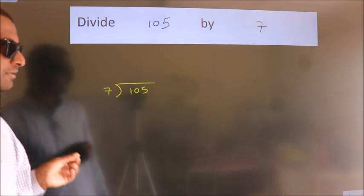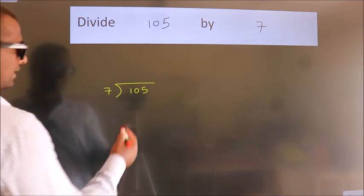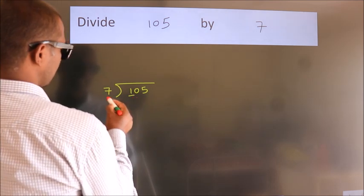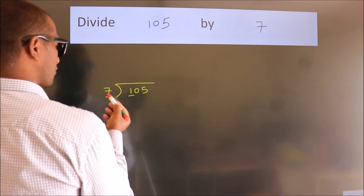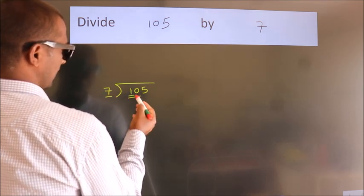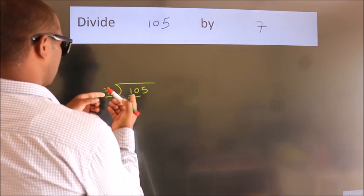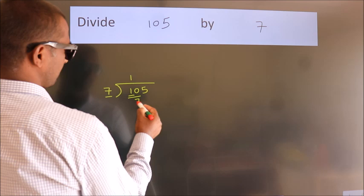This is your step 1. Next, here we have 1, here 7. 1 smaller than 7. So, we should take two numbers, 10. A number close to 10 in 7 table is 7 once 7.